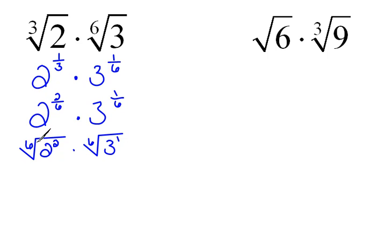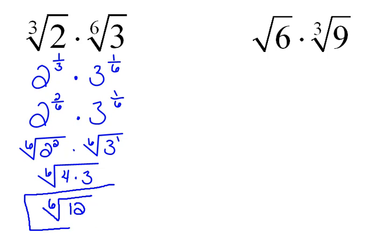And now that the index is the same for both, we can go ahead and write it as a single radical. So, this would be the sixth root of 2 squared, which is 4, times 3 to the 1st, which is 3. So, this would be the sixth root of 12. And again, there is not a perfect sixth power that goes into that. So, we just have to say that's as simple as possible.